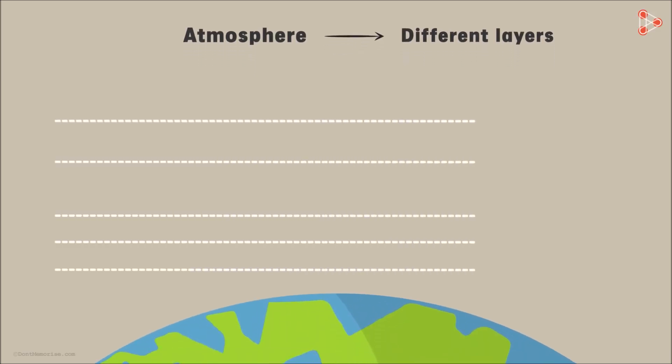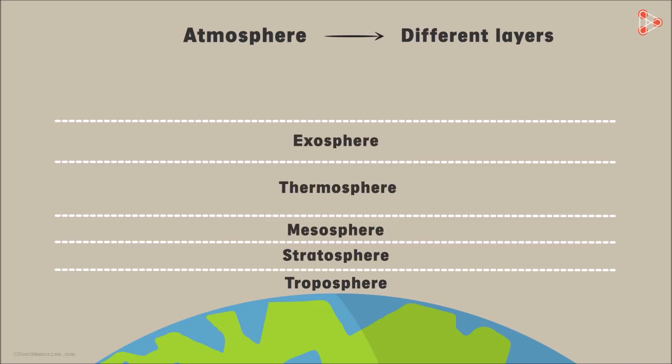Did you know that the atmosphere is divided into different layers? The atmosphere is divided into five layers namely the troposphere, stratosphere, mesosphere, thermosphere and exosphere.